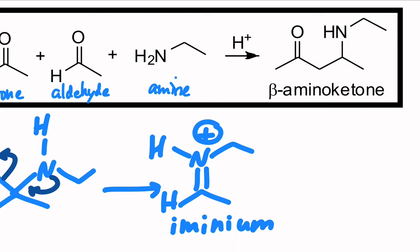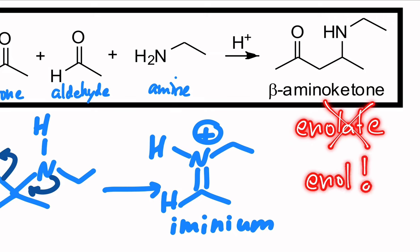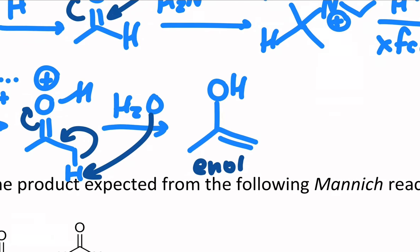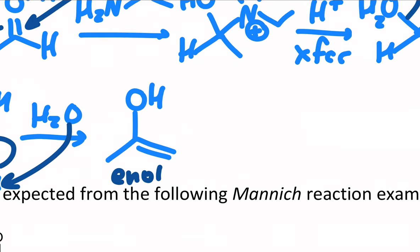That's how enolate chemistry works. But we can't have an enolate present because we are in base. So the acidic version of an enolate is an enol. Hence the reverse tautomerization. So we have our enol, and this enol sees our iminium that we just made from up above.